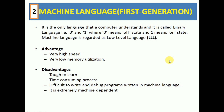Machine language is called low level language because it is very close to the hardware. Its advantages are: very high speed and low memory utilization. The disadvantage is that it is tough to learn, because everything has to be given in zeros and ones, which is very difficult for a human being to understand.